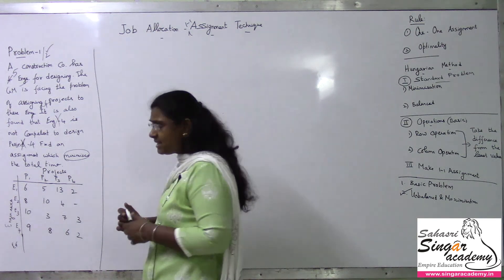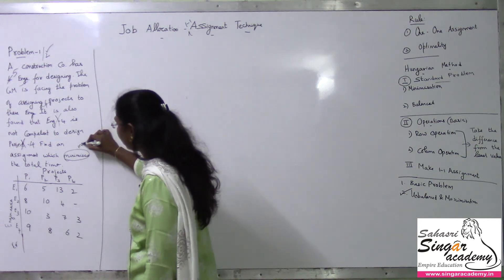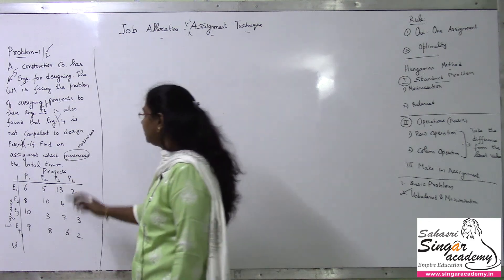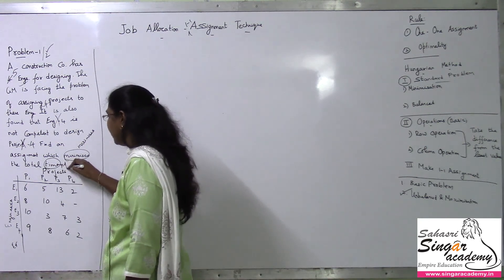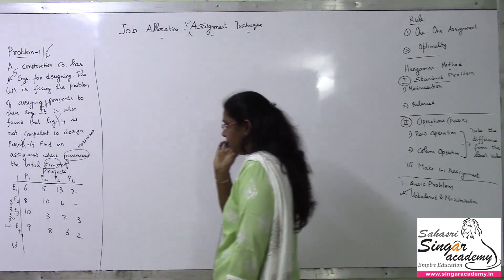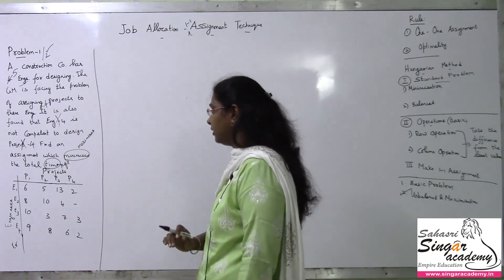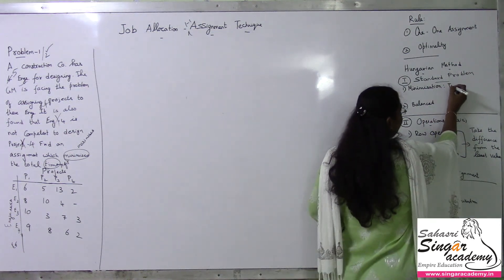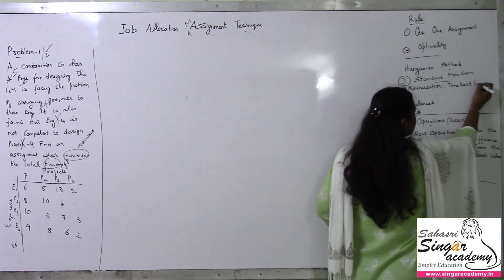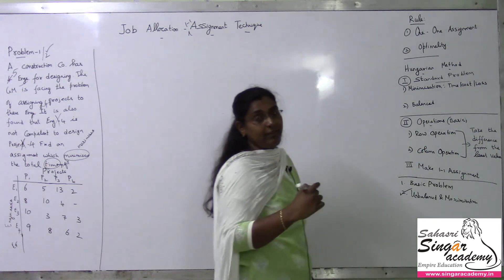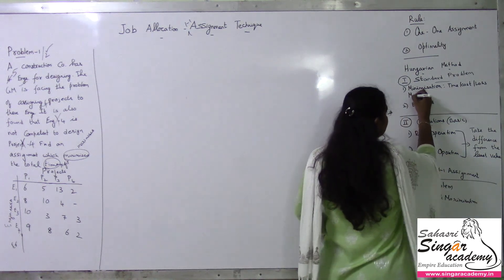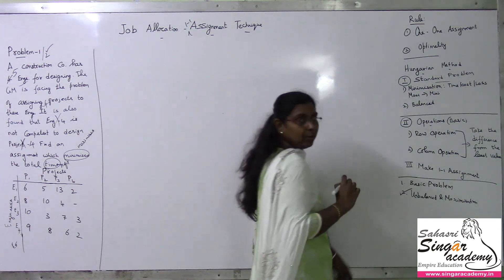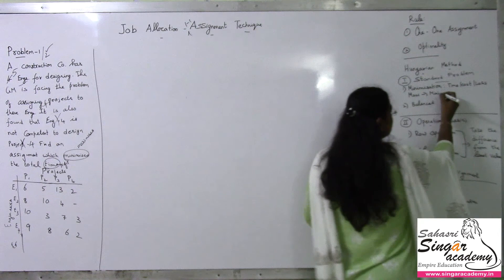In case we have a maximization problem, we need to convert it to a minimization problem. If it is a minimization problem, we work with terms like time, cost, or loss — it is all the same. Here they are talking about profit, so it is a maximization problem. I have to change the maximization problem to a minimization problem — this is the first step.